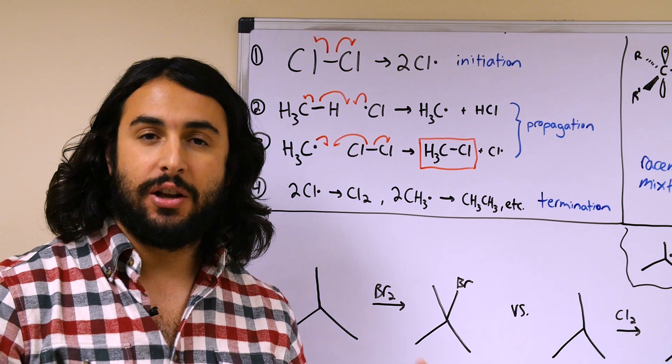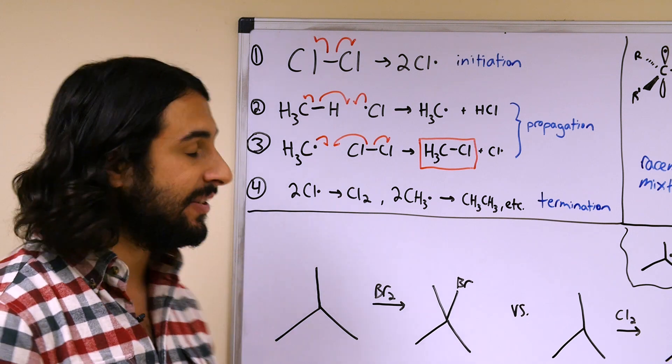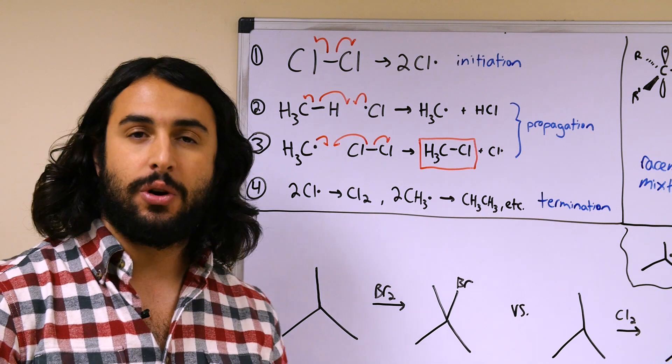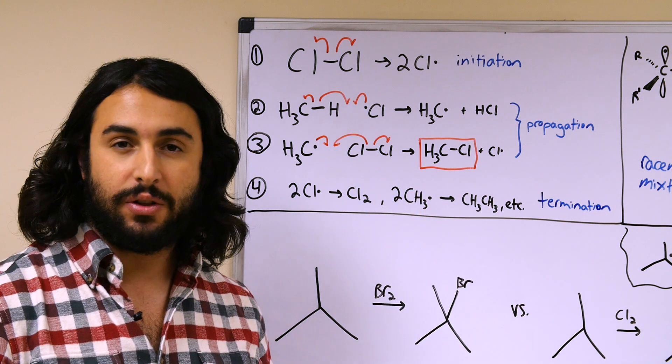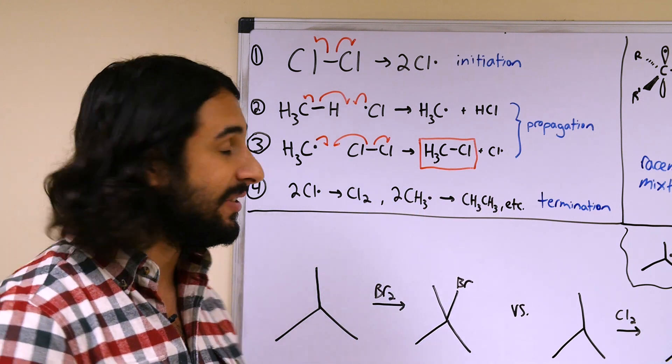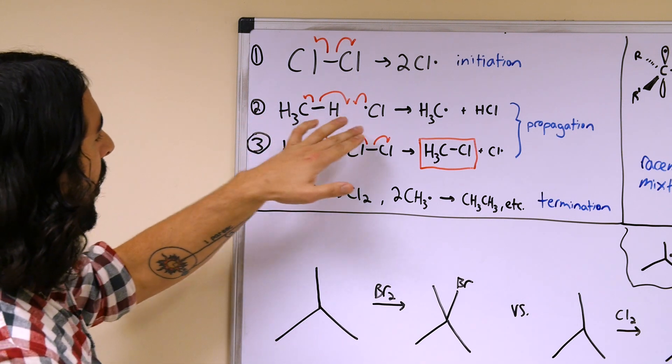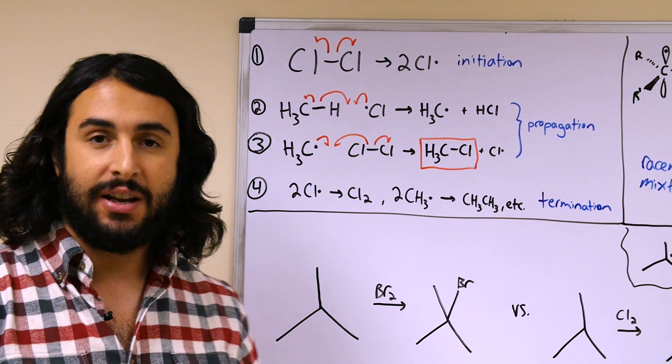Many radicals are unstable, which is what can be so deleterious when radicals interact with our DNA and other biological systems. A radical can find an alkane and is going to propagate the existence of other radicals because of its own instability.